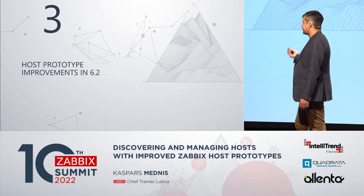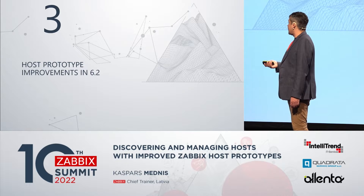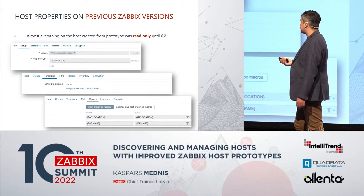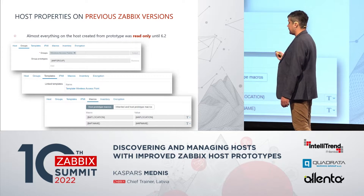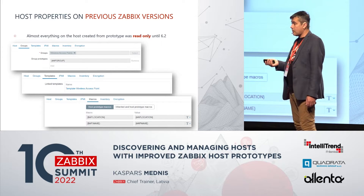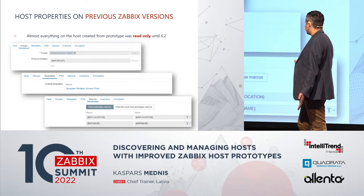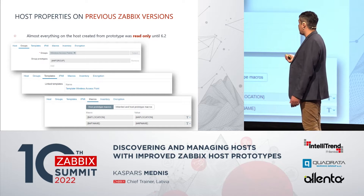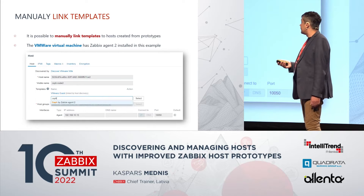Let's talk about the main topic — what are the improvements in 6.2? In previous versions, everything was grayed out: templates linked, and nothing could be changed — all the hosts would look the same.